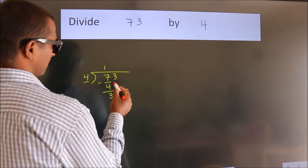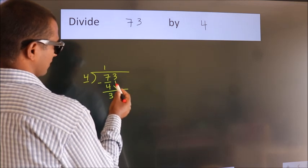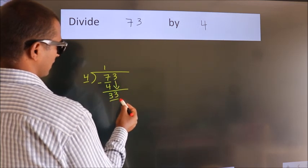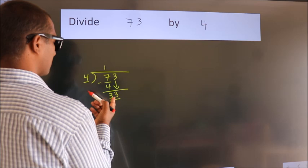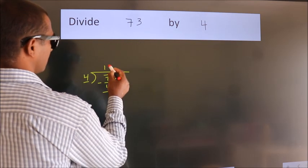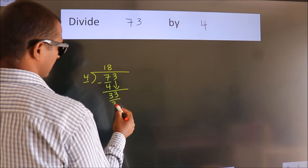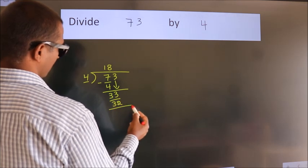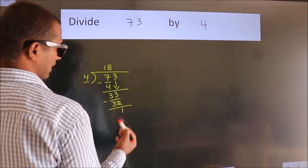After this, bring down the next number. So 3 comes down, making 33. A number close to 33 in the 4 table is 4 times 8, which is 32. Now we subtract and get 1.